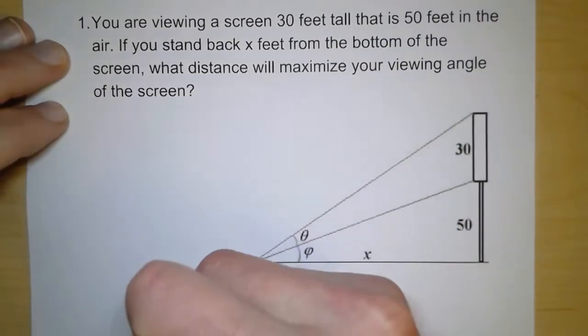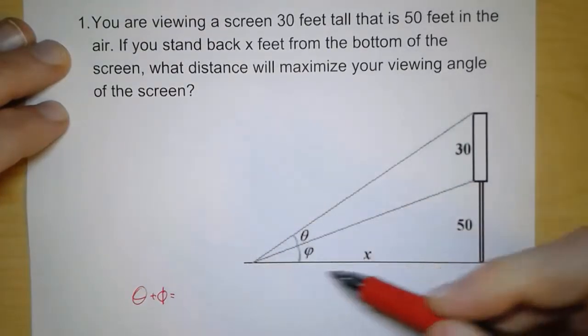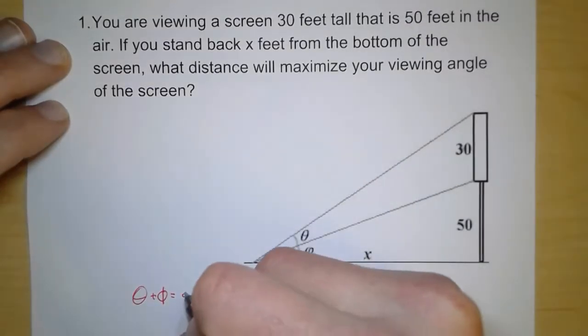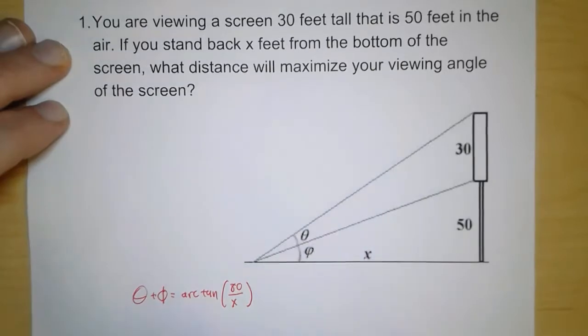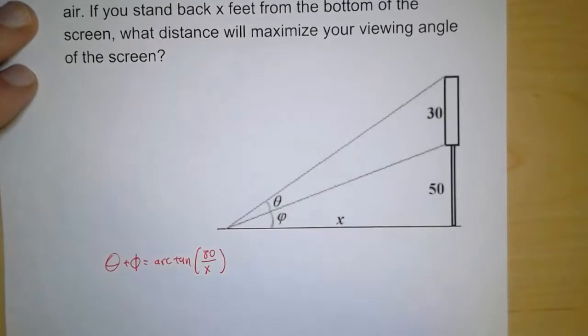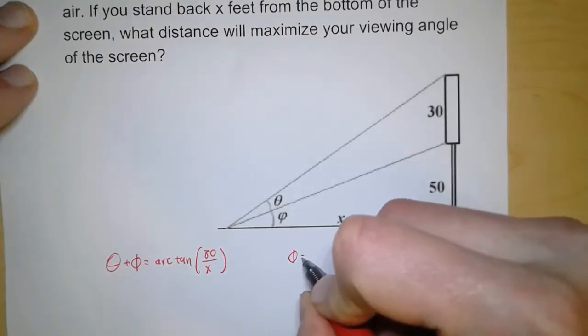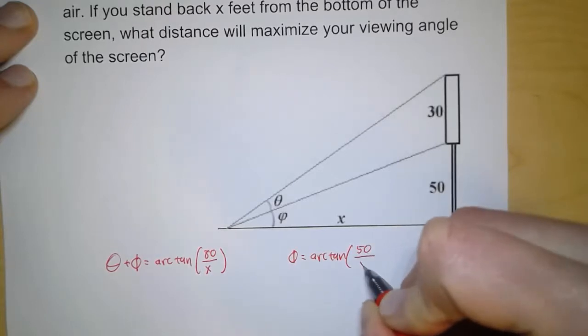And so if I want theta plus phi, that means I'm using this triangle right here. And so that means 80 is the opposite side and x is the adjacent side. So that's going to be arc tan of 80 over, now in the previous video it was 100, but we're just going to leave it as x. And then in the small triangle, we're going to have phi, and that's going to be arc tan of 50 over x.